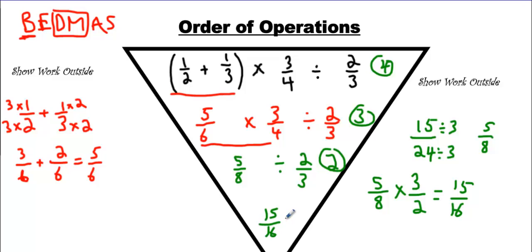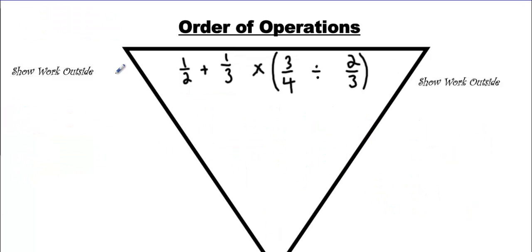Now if you didn't reduce — if you just kept 15 over 24 — you're going to get big numbers to multiply and divide by. And who wants that? Not me.